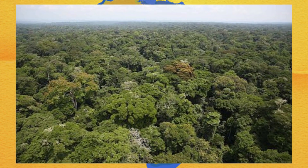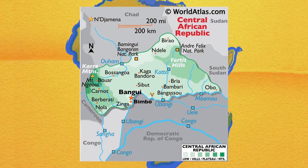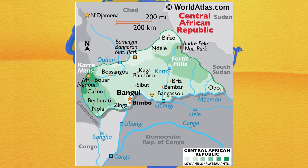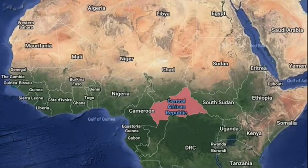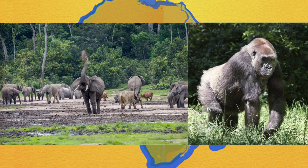It has been estimated that 8% of the country is covered by forests, with the densest parts generally located in the southern regions. The Central African Republic is the focal point of the Bangui Magnetic Anomaly, one of the largest magnetic anomalies on earth. The country is noted for its population of forest elephants and western lowland gorillas, and it also has other wildlife.